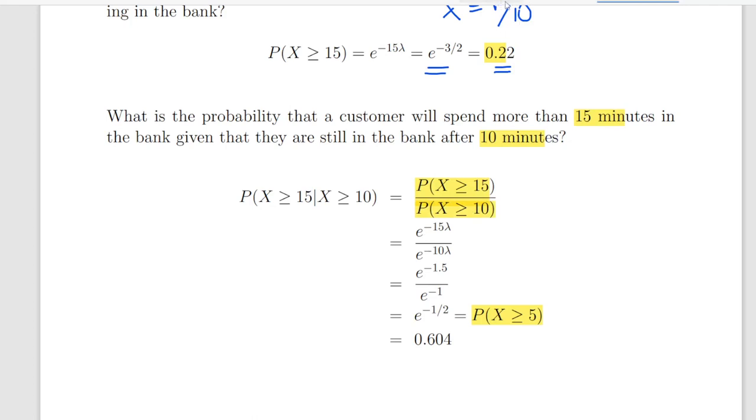We already have calculated the probability of x greater than or equal to 15, so all we have to do is also calculate the probability of x greater than or equal to 10, which is essentially 10 times 1 over 10 is e to the minus 1. So, when you divide e to the minus 1.5 by e to the minus 1, you should get e to the minus 0.5. And that actually is the answer.